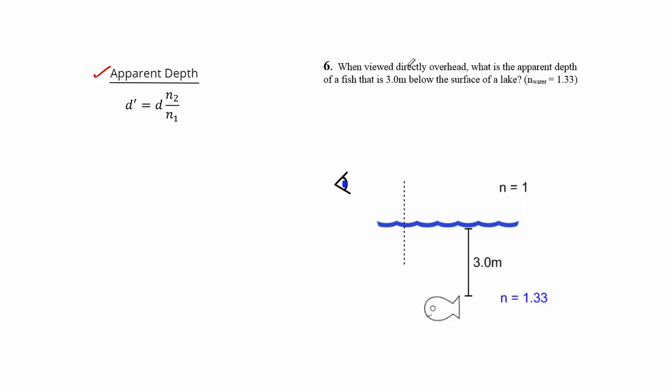This is best seen in the context of our problem here. Let's look at question number six. When viewed directly overhead, what is the apparent depth of a fish that is 3.0 meters below the surface of the lake? The index of refraction for water is given.